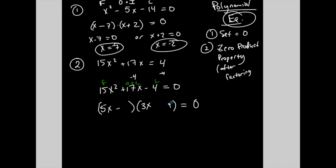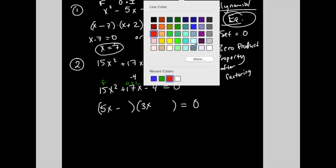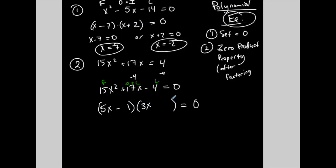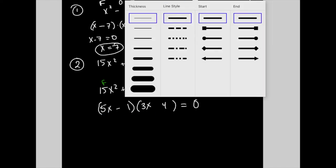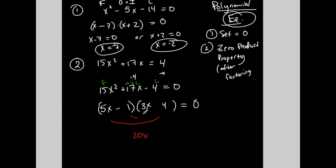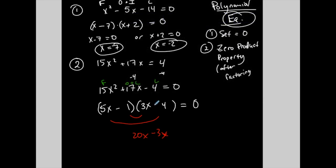So I'm going to try the 1 here and the 4 there to see if that works. I hope you practice this enough to where you get really good and can do your outer and inner just by looking at it — it takes practice. The outer is 20x and the inner is negative 3x. There it is — 20 minus 3 is 17. I have my negative 4 where I want it: 5x times 3x is 15x², and negative 1 times positive 4 is negative 4. The outer and inner combine to give me what I need in the middle, so this is factored correctly.